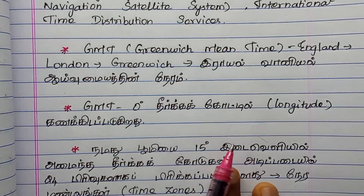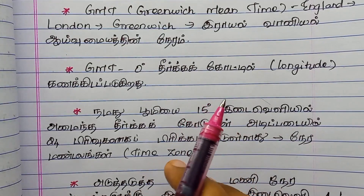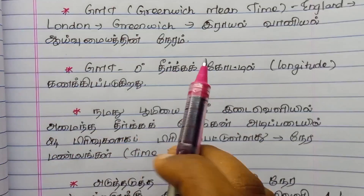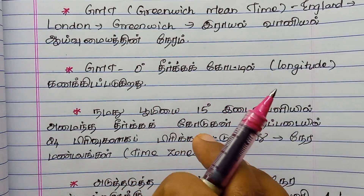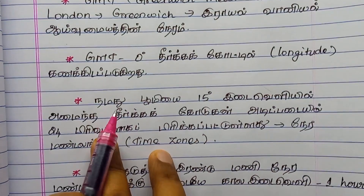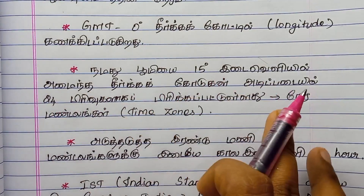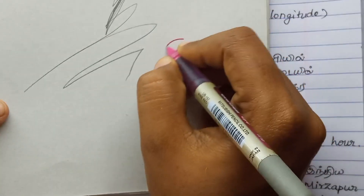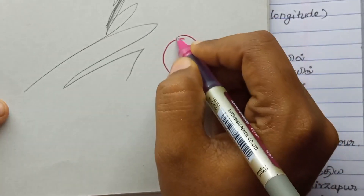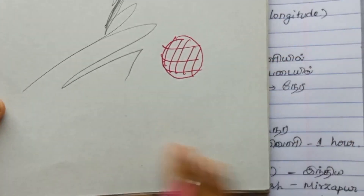GMT is the Greenwich Mean Time line. I will tell you about a map of geography — we will put the map with longitude and latitude in the direction of geography.